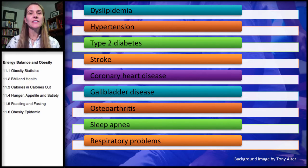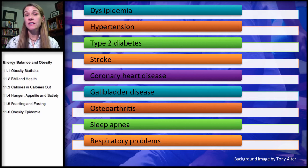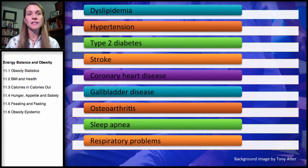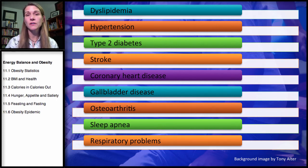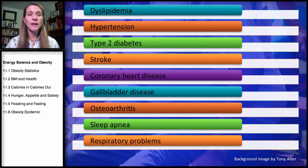Why is obesity a problem? Why do we care? We'll discuss this in more detail later, but obesity is associated with a number of health problems: dyslipidemia (abnormal blood lipids), hypertension (high blood pressure), type 2 diabetes — which we discussed in our carbohydrate chapter — stroke and heart disease, gallbladder disease, osteoarthritis, sleep apnea, and respiratory problems.